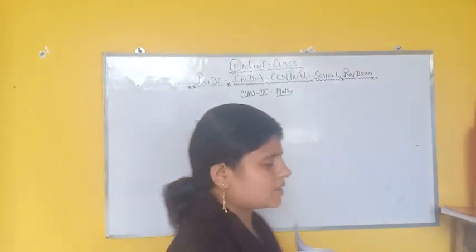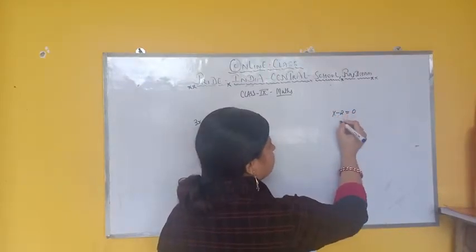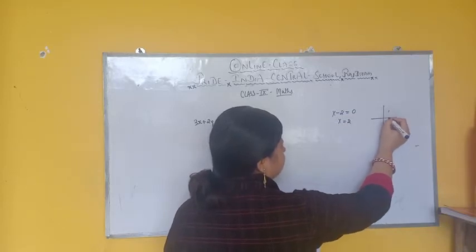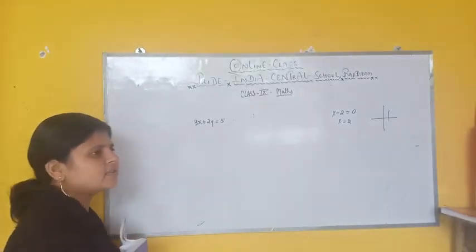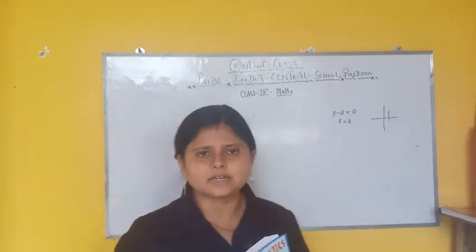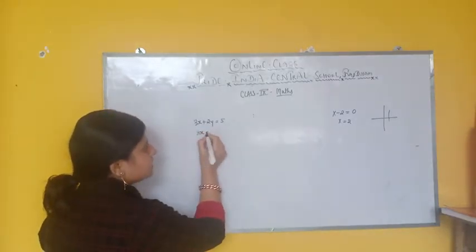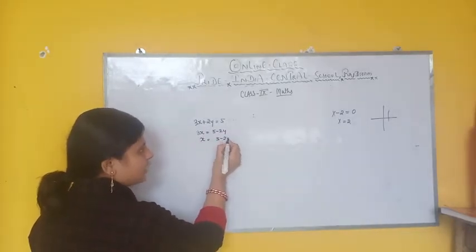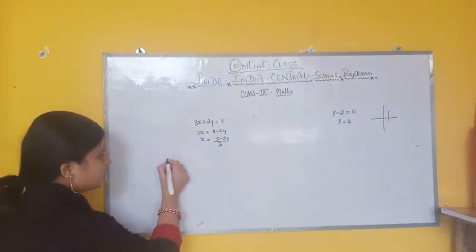As I told you how to make a graph — if it is x minus 2 is equal to 0, then x is equal to 2, and you can represent this on a graph. But in the case where you have 2 variables, x and y, then how you are going to represent this on a graph — that I discussed last class. Suppose 3x equals 5 minus 2y, then x equals (5 minus 2y) divided by 3. You have one equation in terms of x and y, and you will make a table of values.